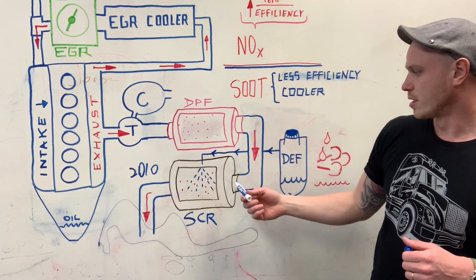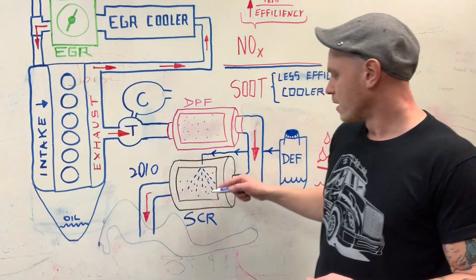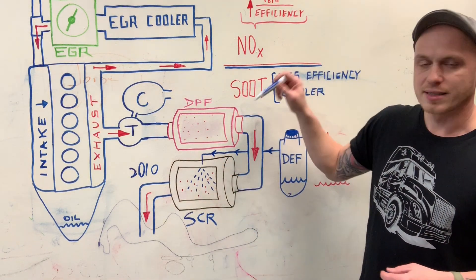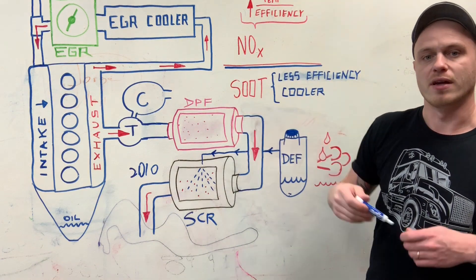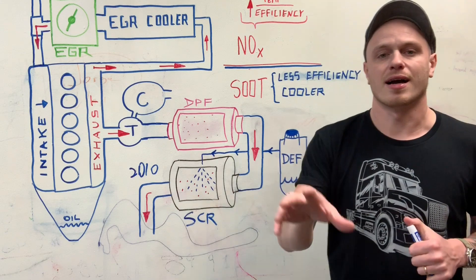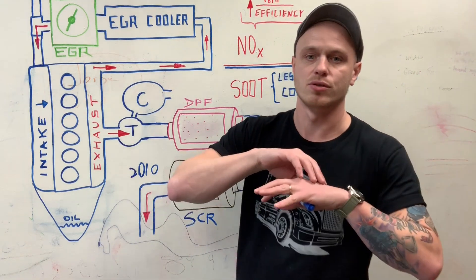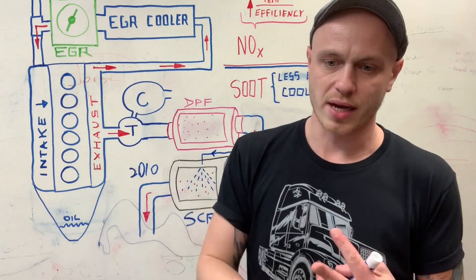The SCR catalyst looks like a muffler, but it's taking the exhaust gases and injecting the DEF. Then it targets the nitrous oxides, the NOx, and breaks it down into nitrogen, water, and carbon dioxide.